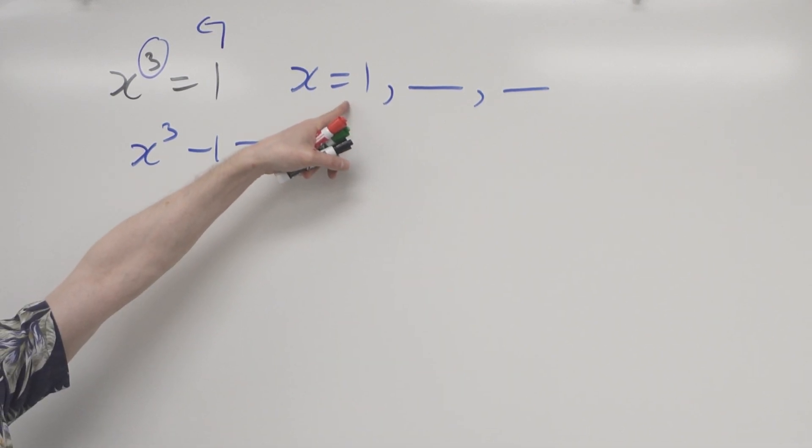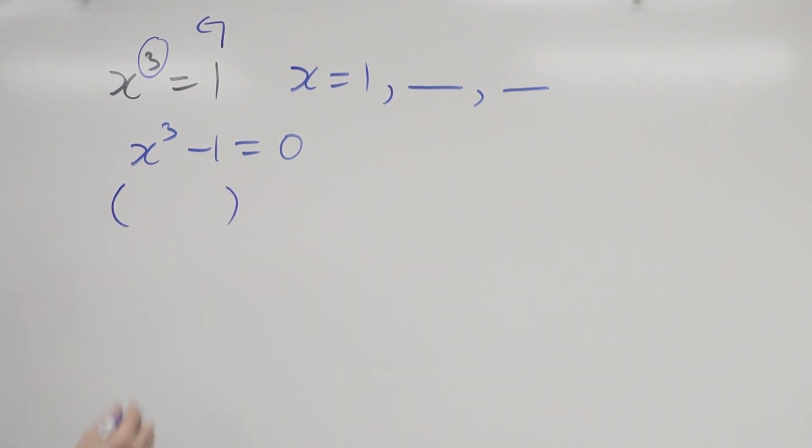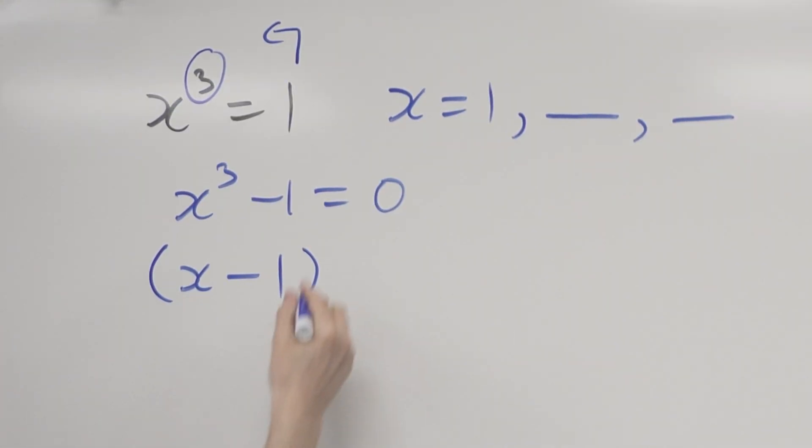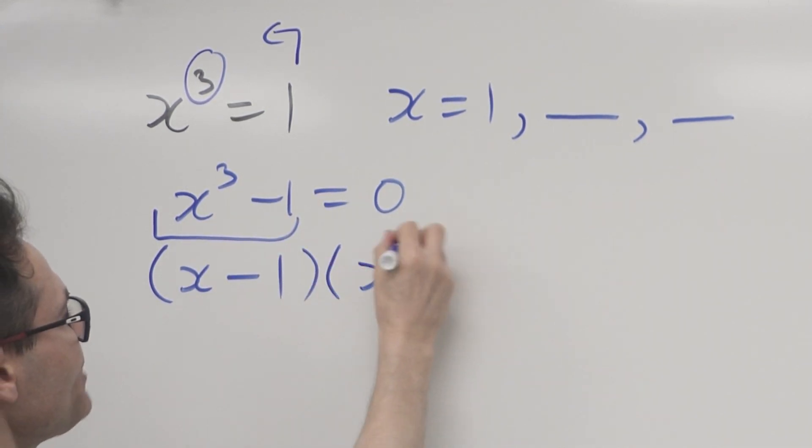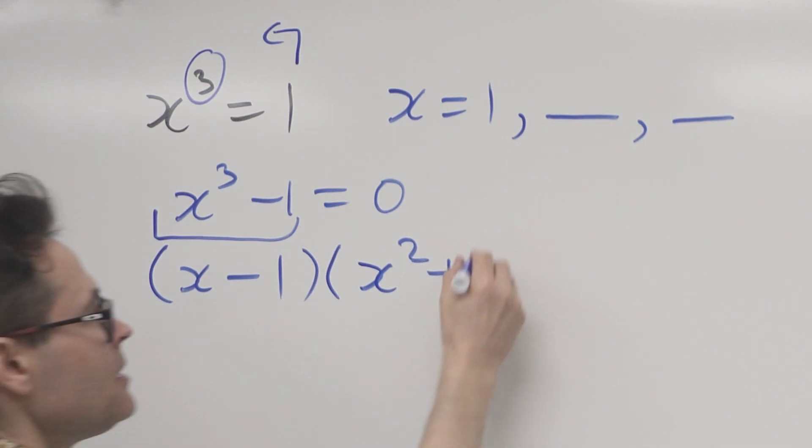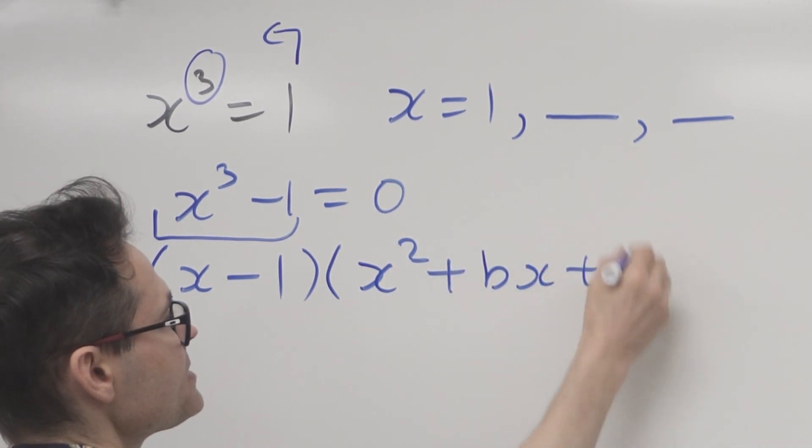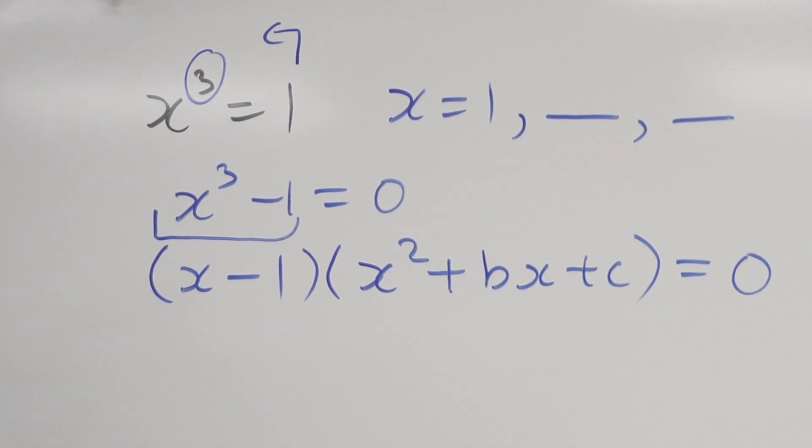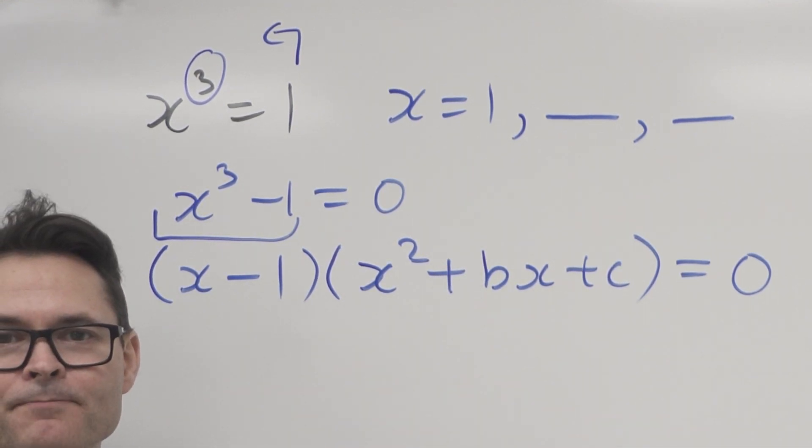Now I know that one of the answers is one. So what it means is I could work backwards. So if one of the answers is one, that means that x minus one has to be a factor. And what that also means is that to create this cubic x cubed minus one, I've got this linear factor multiplied by this other factor, a quadratic, because a linear times a quadratic gives me a cubic. So x squared plus bx plus c equals zero.